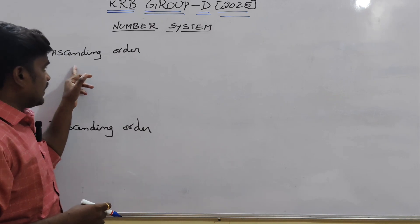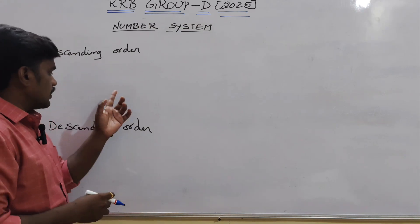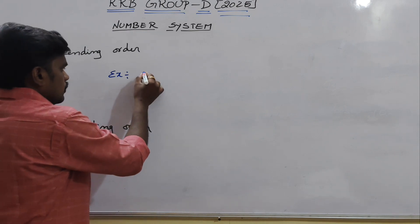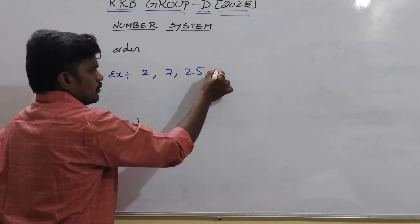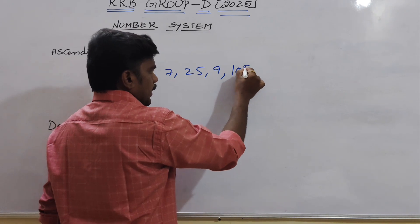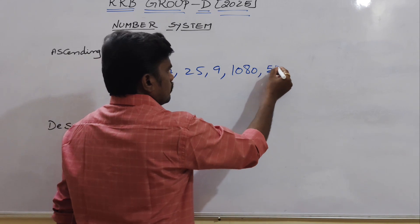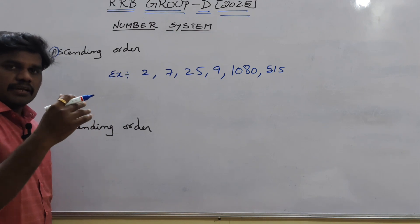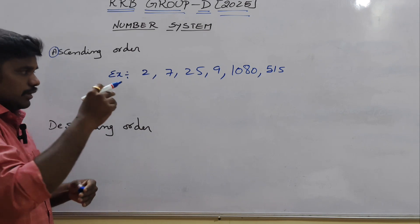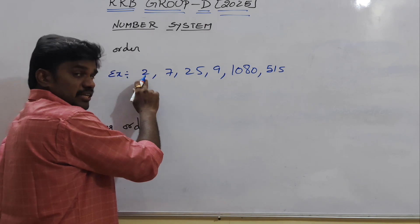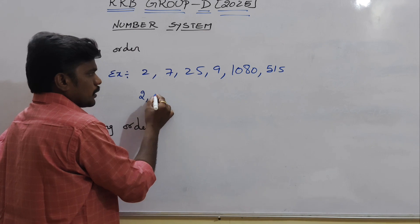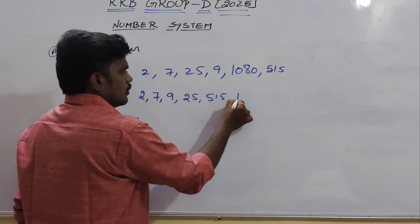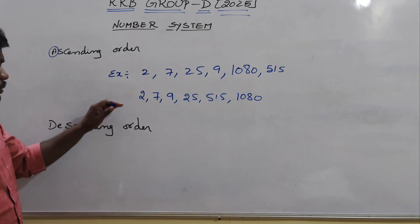Next topic: ascending order and descending order. Everybody gets confused between the two. Let me explain clearly. Take this example: 2, 7, 25, 9, 10, 8, 0, and 5, 15. Ascending order — think of A to Z, starting from the smallest number going upward: 0, 2, 7, 8, 9, 10, 25, 15. That is ascending order.